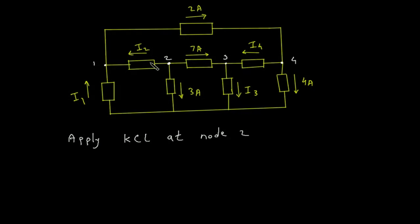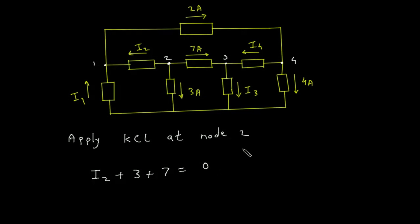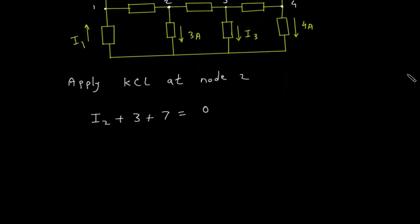Apply KCL at node 2. Summation of all the incoming current is equal to summation of all the current leaving the node. There is no incoming current — all the currents are leaving. So I2 plus 3 plus 7 is equal to 0. Therefore I2 is equal to minus 10 ampere.